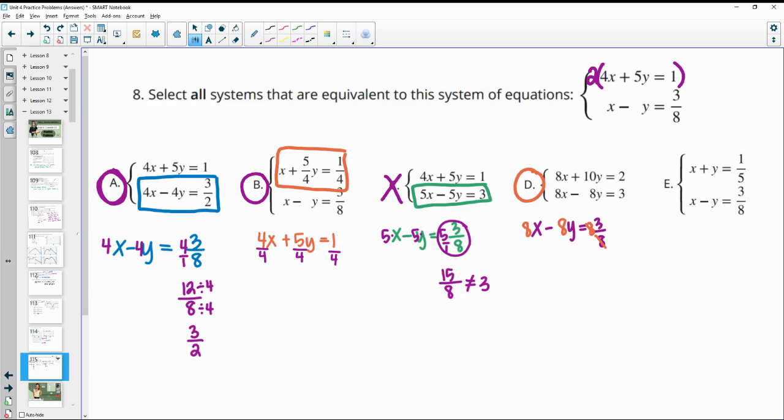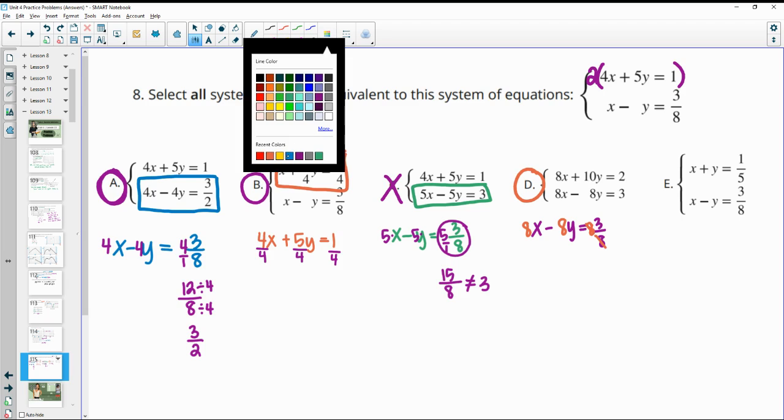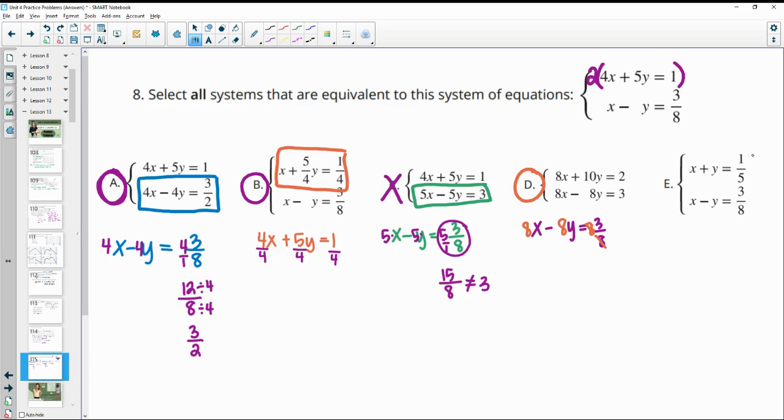Part E, they changed the first equation. So let's take a look at the first equation. And they went from 4x plus 5y equals 1, and then they went down to a 1x. So that means that they divided by 4 to everything is one way we can look at that. And 4 divided by 4 is 1, but 5 divided by 4 is not 1y. So this one is not equivalent.